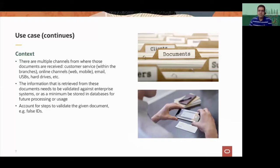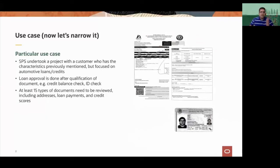A financial institution like a loan processing company might want to validate the account number, name, and address of the person. They also might need to validate against some kind of government registry — for example, if you provide an ID, you want to make sure that ID is genuine and not a false ID. SPS undertook a project with a customer using Oracle technologies to solve this particular problem.